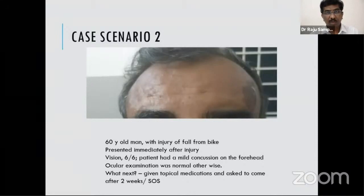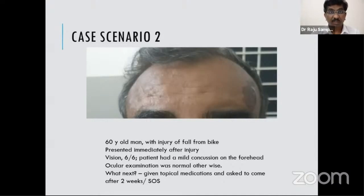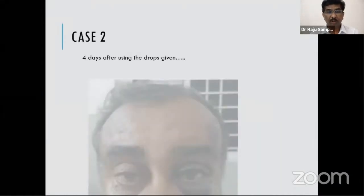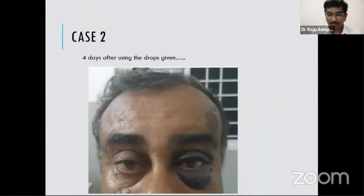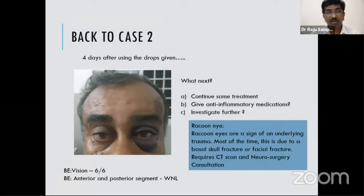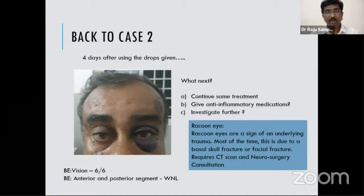Patient number two: a 60-year-old man who came with injury following a fall from a bike. The patient presented immediately after the injury with vision 6/6 and a mild concussion injury on the forehead. The patient was given topical medication and asked to come after two weeks. After four days, the patient came back with periorbital discoloration — raccoon eyes. This is a sign of underlying trauma and most of the time can indicate a basal skull fracture or fracture of the facial bones. This requires an urgent CT scan and a neurosurgery consultation.